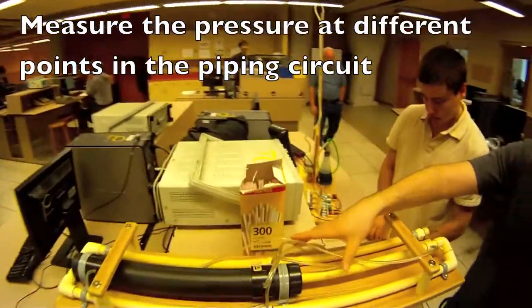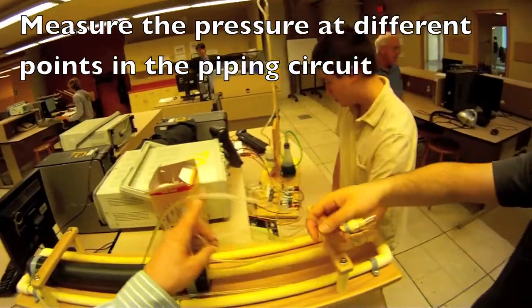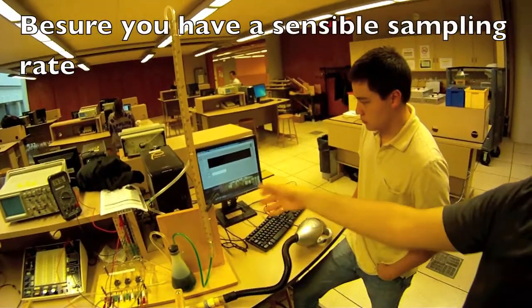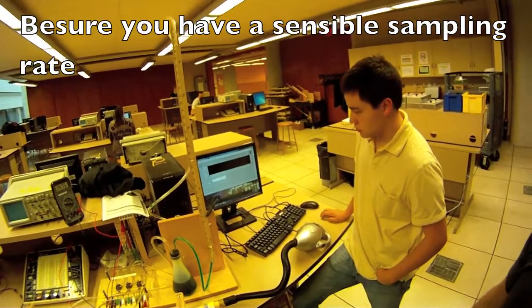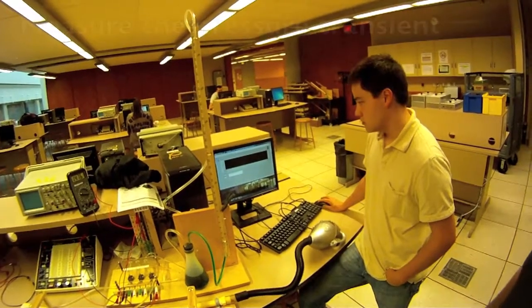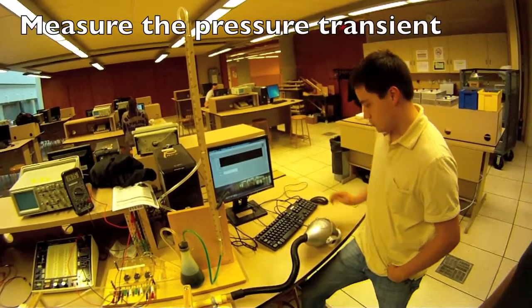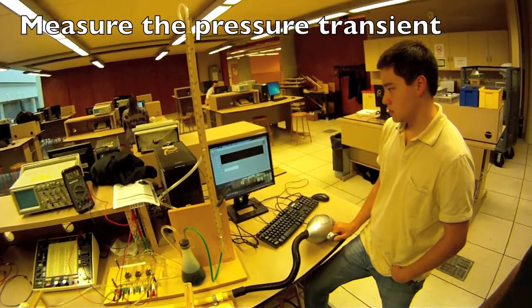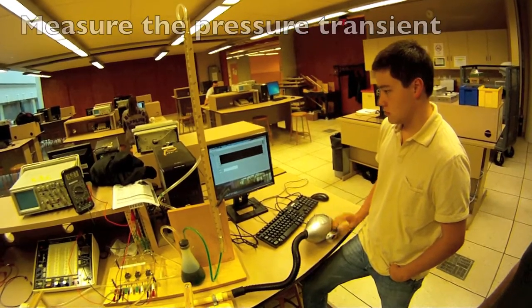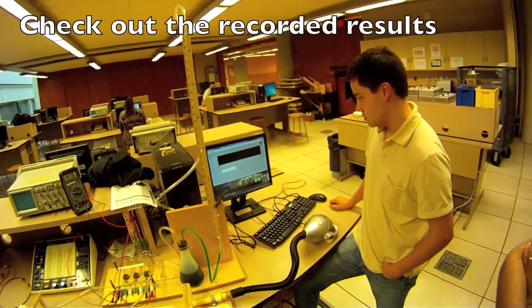They have five points to measure the pressure at, same frequency at the beginning, which is 1 kilohertz, and for 10 seconds. So you're going to start it recording and then turn on the vacuum cleaner.